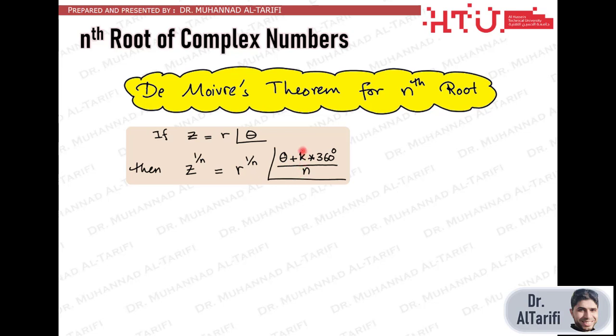Any integer multiplier would give us a valid phase angle for a valid nth root of z. But this doesn't mean that we have infinite number of solutions. The unique solutions or roots are only n solutions and they can be found by substituting k, which is the integer multiplier, for values from 0 to n minus 1.